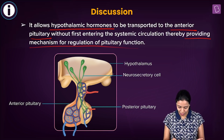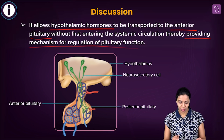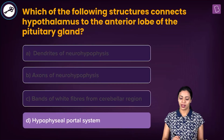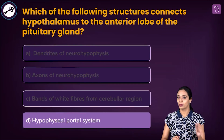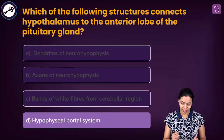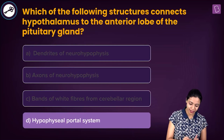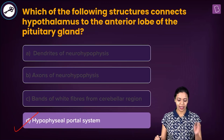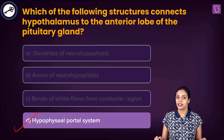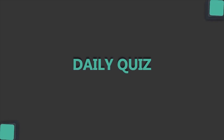So the structure that connects the hypothalamus to the anterior lobe of the pituitary (adenohypophysis) is the hypophysial portal system. The correct answer to this question is option D.